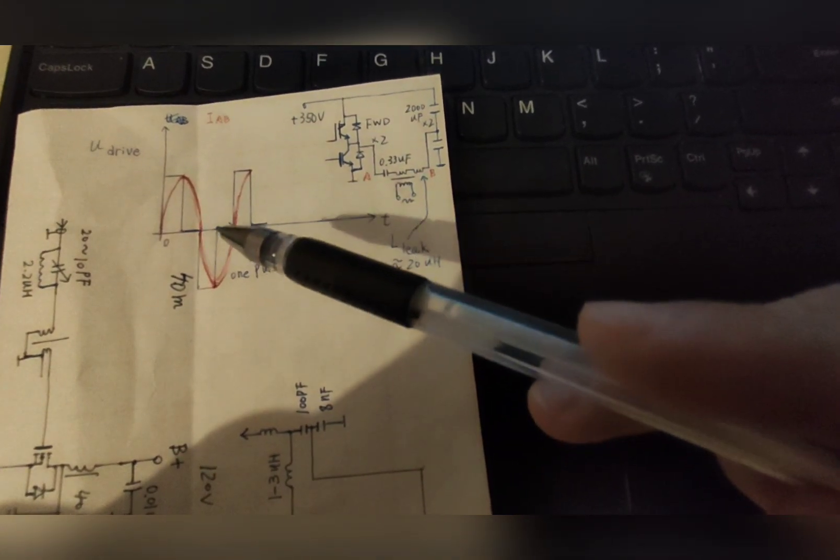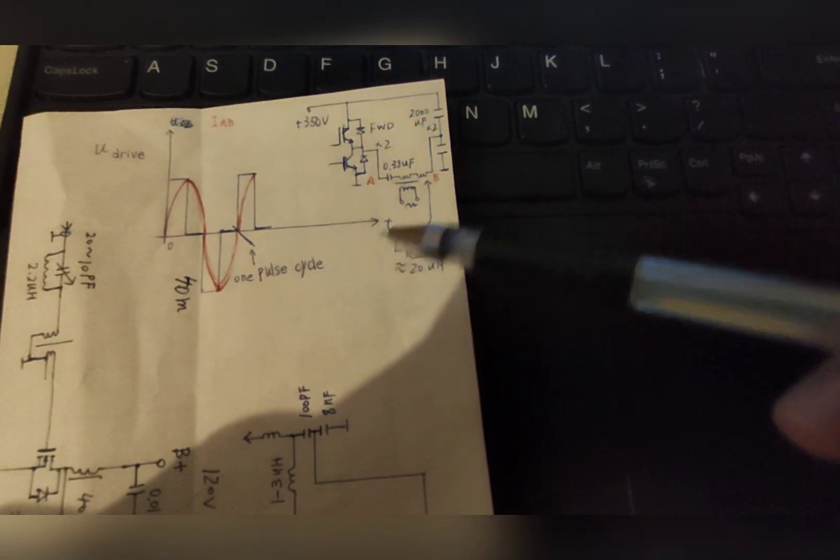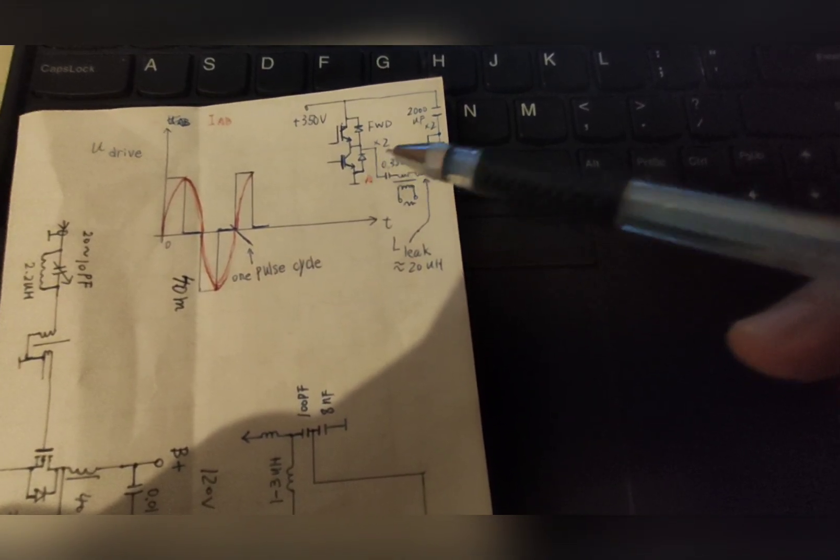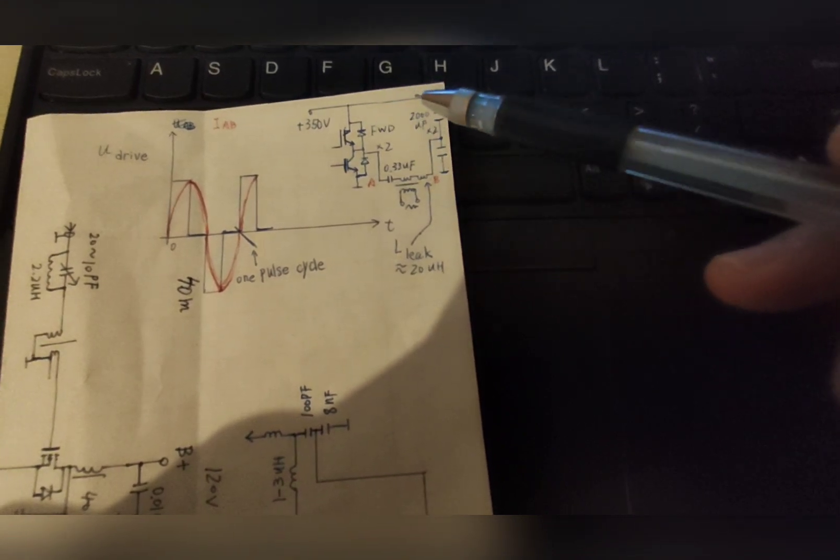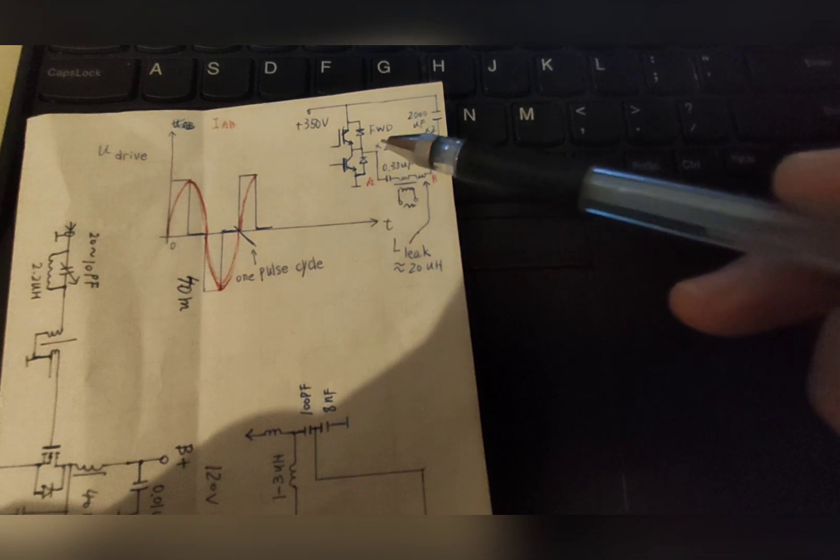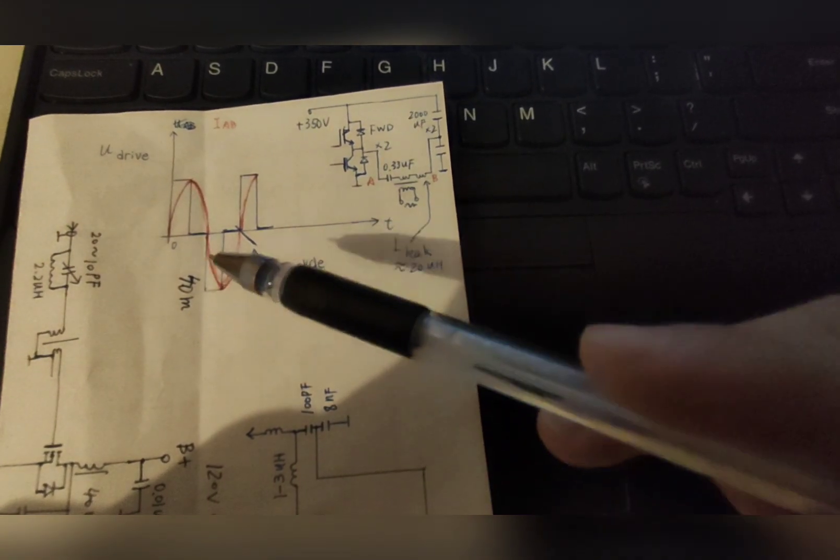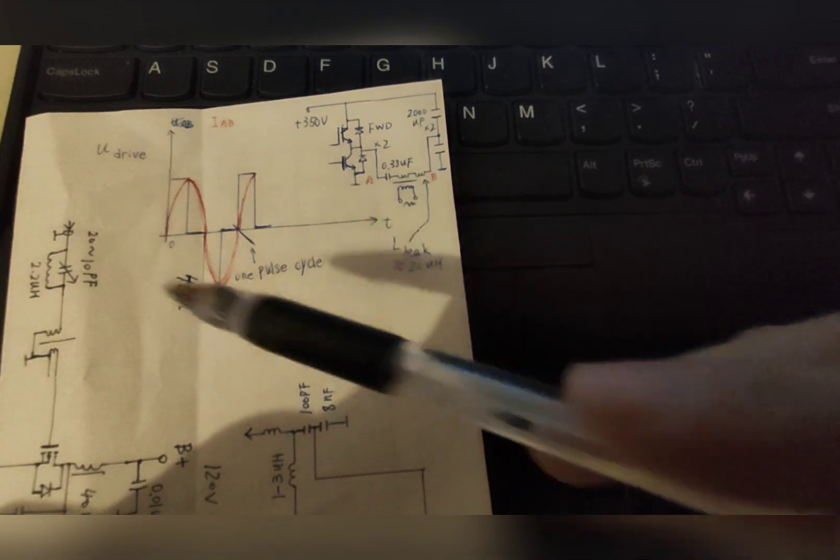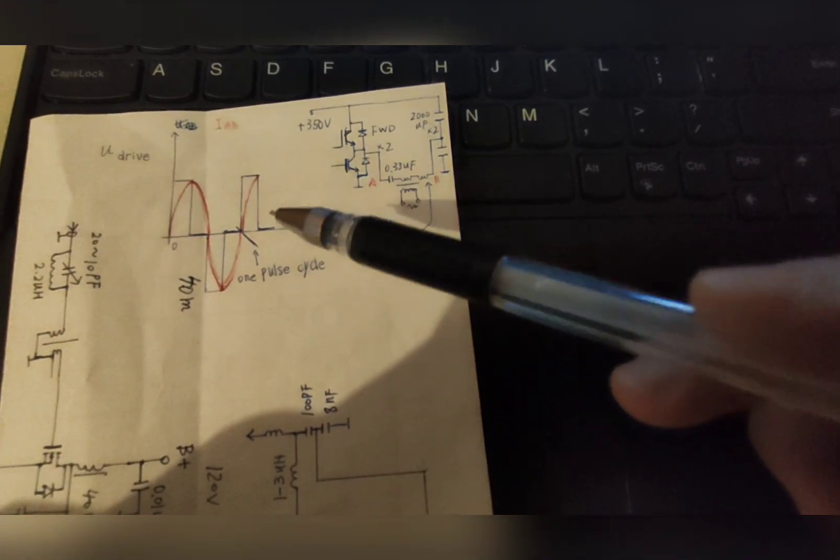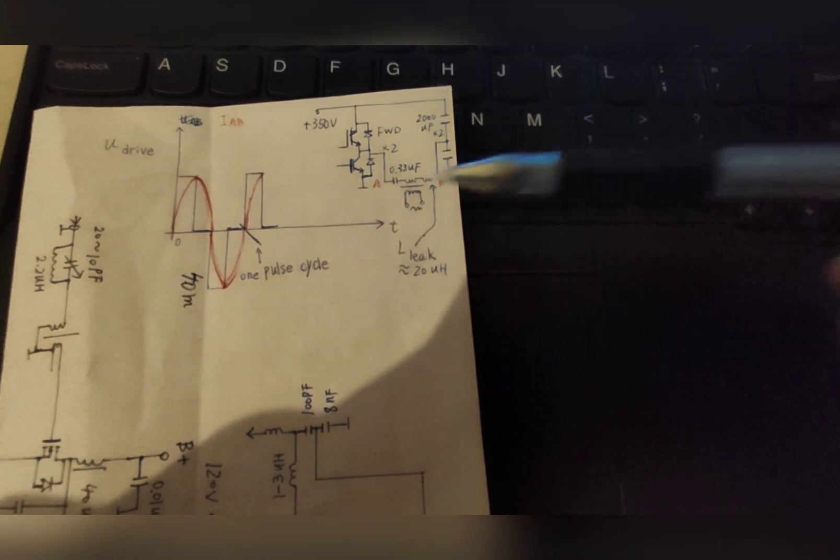And we turn off the IGBT at this point as well. So the current still goes clockwise in the upper part of the half bridge through the upper freewheeling diode. And so this cycle continuously happens, and the half bridge is working.